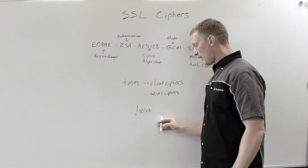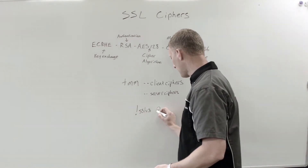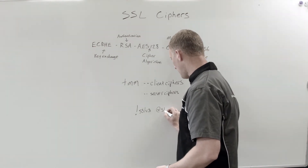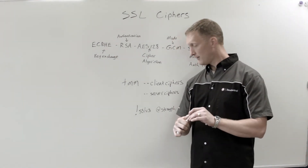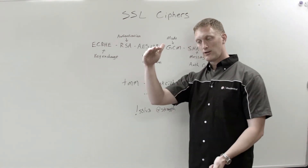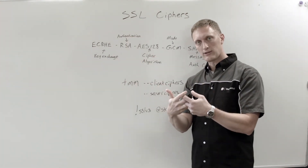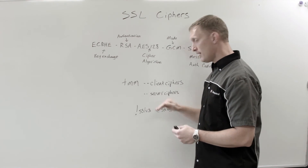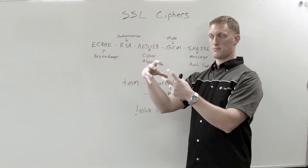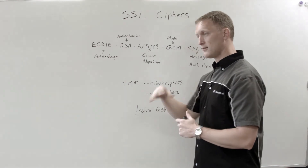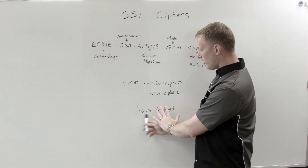There are a lot of different modifiers — not just SSLv3, you can put any number of things there. Another one is the 'at' sign. For example, '@STRENGTH' will sort the ciphers based on strength. When the client browser comes in to negotiate the SSL session, the Big IP will offer up the highest-strength cipher first, and when the browser finds a match, you ensure you always connect with the highest strength possible.